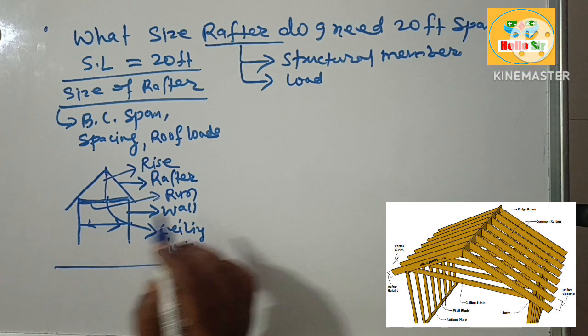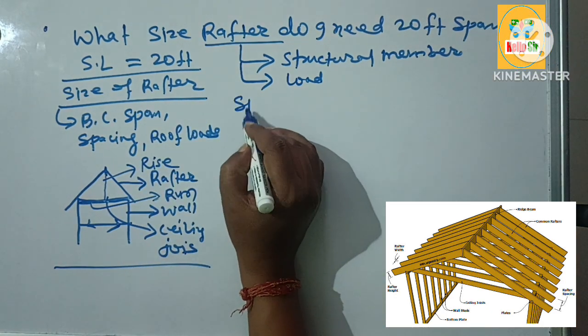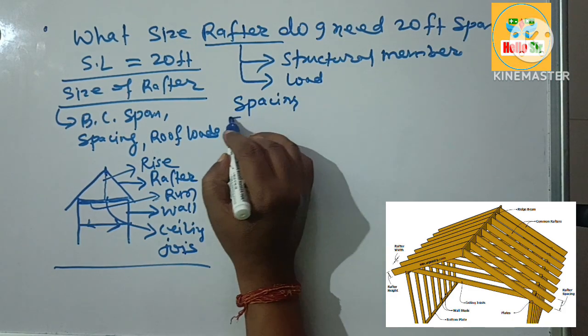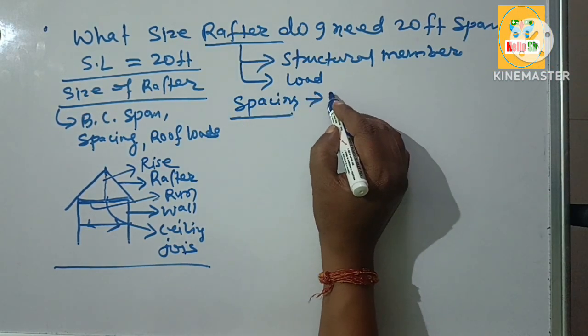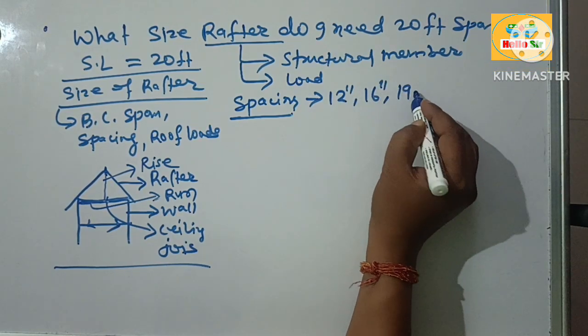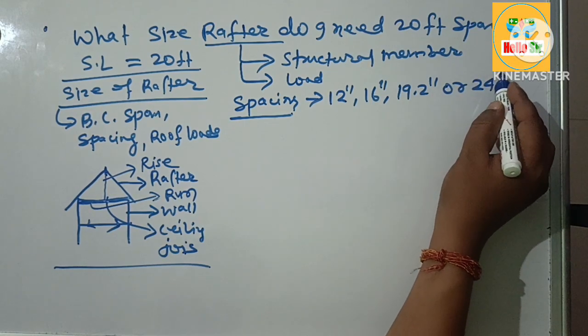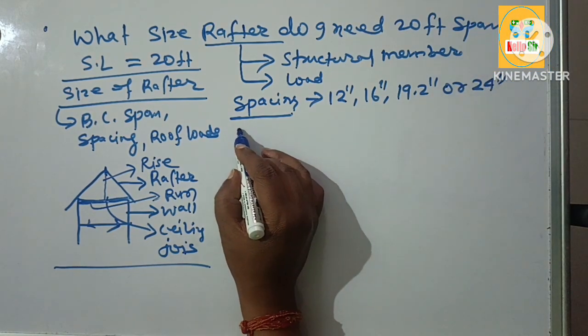Here you have to find out the correct rafter size. It also depends on spacing. The spacing between the rafter may be 12 inches, 16 inches, 19.2 inches or maybe 24 inches.